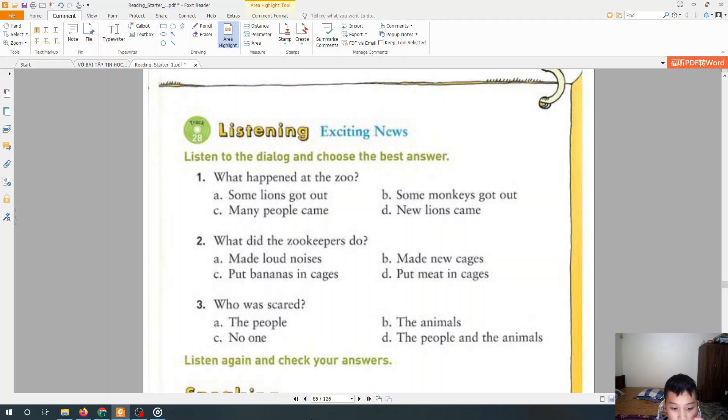Did you hear the news? Yes. Some lions got out of the zoo. Right. People were so scared. I bet. What did the zookeepers do? They put some meat in the lions' cages, and the lions went back in. That's right. The lions were scared too.